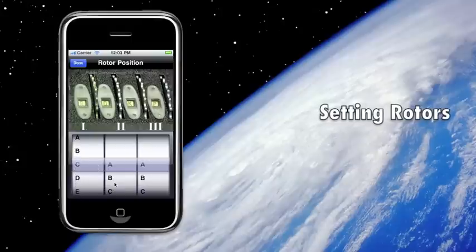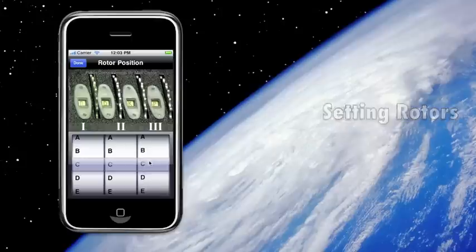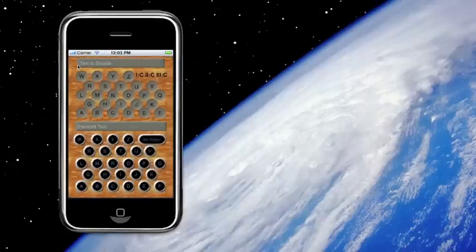I'm just going to set it to CCC, something simple. And this is the value you would share with your friend who's going to decode the message. So you'd make sure they knew what these were, because they're going to have to set them to decrypt the message.